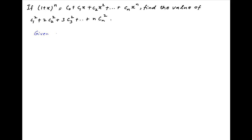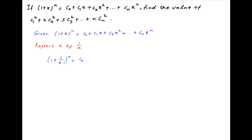The standard binomial expansion of (1 + x)^n is equal to C0 + C1·x + C2·x² + ... + Cn·x^n. Then, replacing x with 1/x, we get (1 + 1/x)^n = C0 + C1/x + C2/x² + ... + Cn/x^n. Let's call this Result 1.